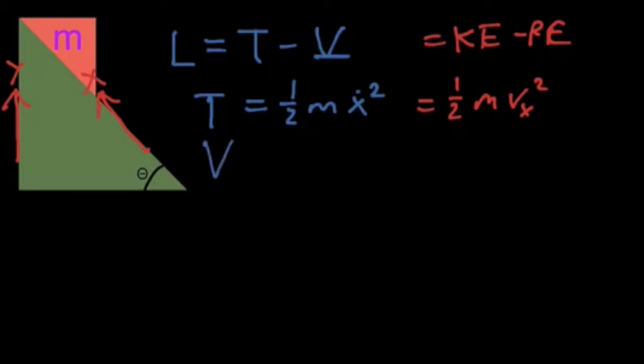And then our potential energy, V, is going to equal minus mgy. Why the minus? Because our g is minus 9.8 meters per second squared, and so the minus cancels with that minus, so that the potential energy increases as y increases. And so that's pretty much the first step done.